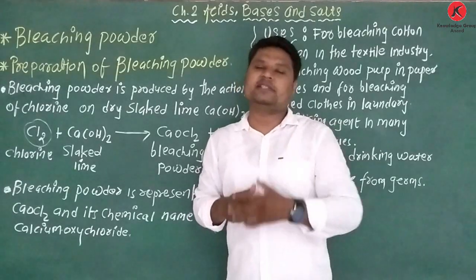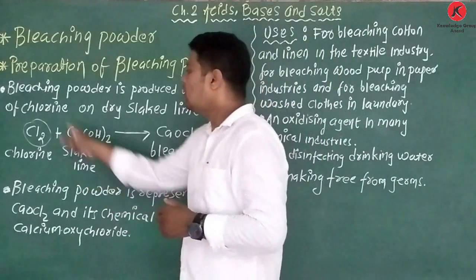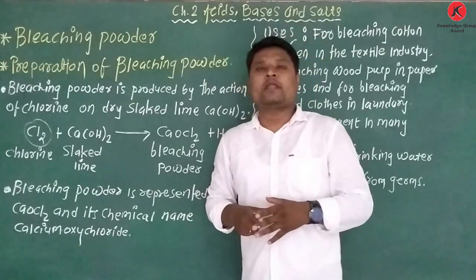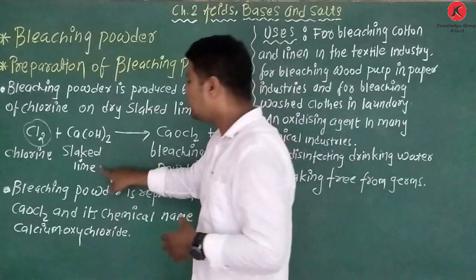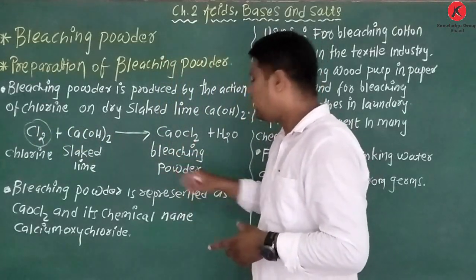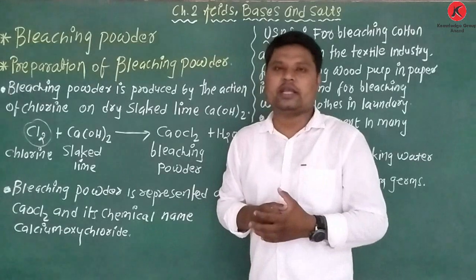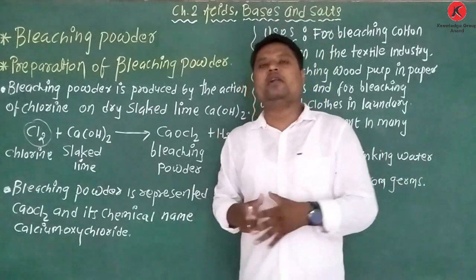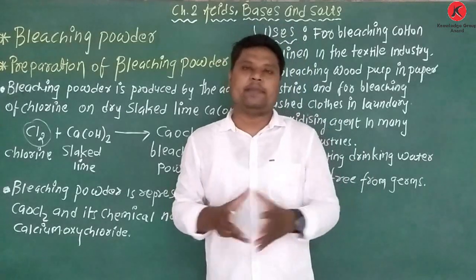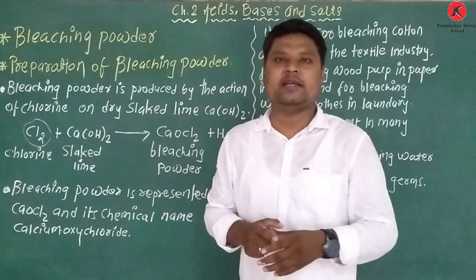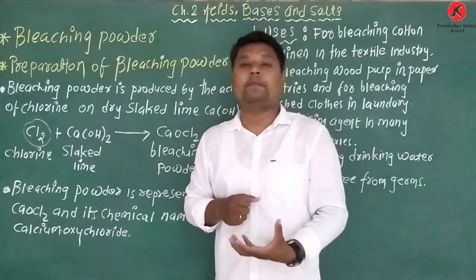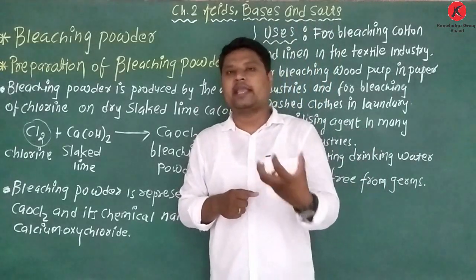We create bleaching powder using dry calcium hydroxide, also called slaked lime. Calcium hydroxide reacts with chlorine to produce calcium oxychloride, which is bleaching powder, and water. The preparation of bleaching powder: bleaching powder is called calcium oxychloride, prepared from calcium hydroxide and chlorine reaction.